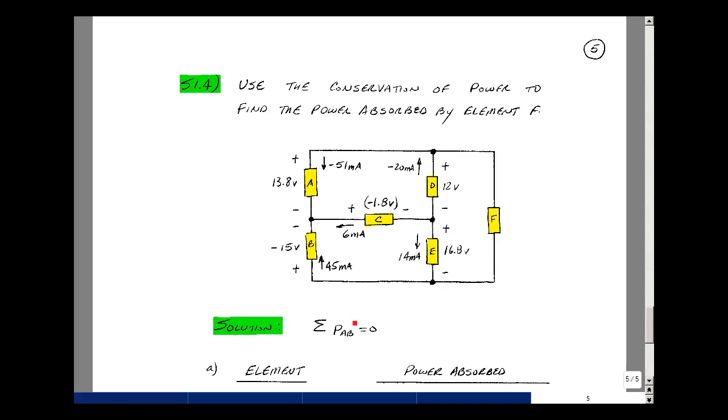You may recall from the class notes, the sum of absorbed power in a circuit at every instant in time is equal to zero. So let's solve for the power absorbed by elements A through E, and then we'll use that to solve for the power absorbed by element F.